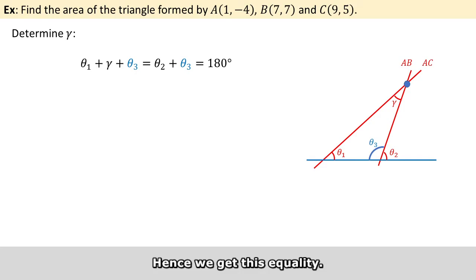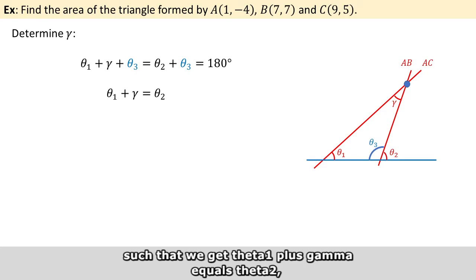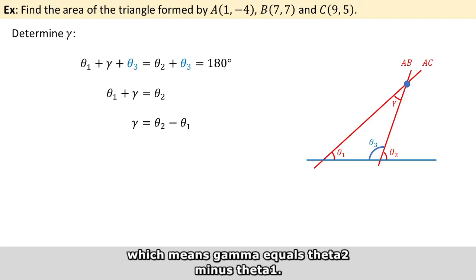Hence, we get this equality. We can eliminate theta 3 such that we get theta 1 plus gamma equals theta 2, which means gamma equals theta 2 minus theta 1.